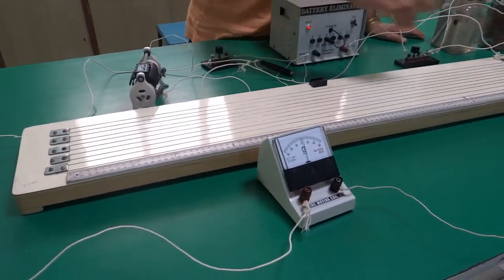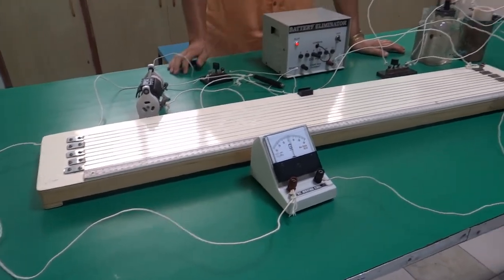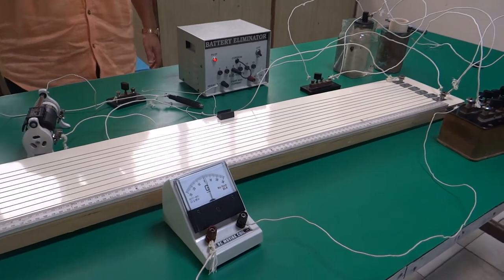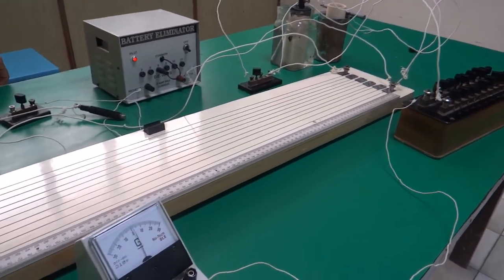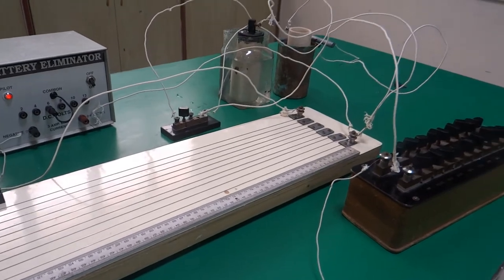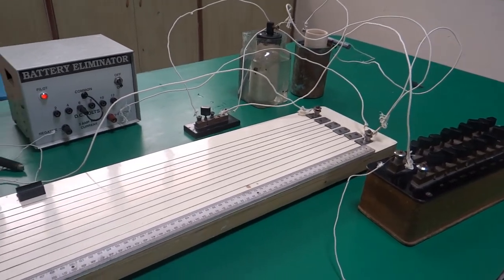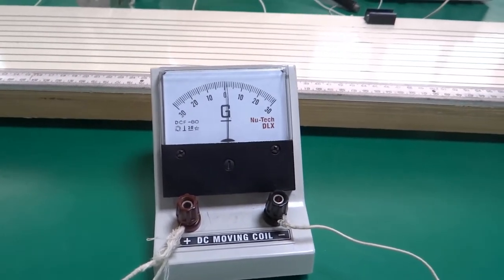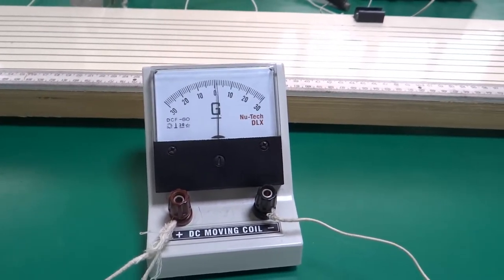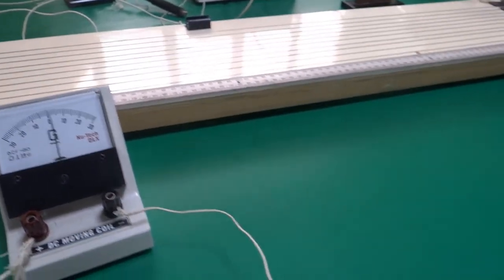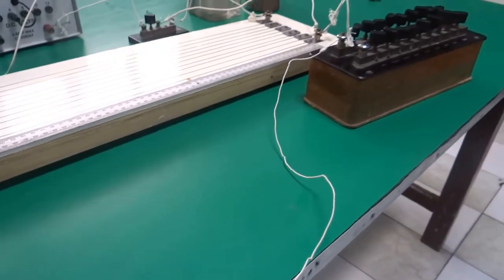This resistance box, even if you want, you need not connect with the circuit. This is required only when deflection in galvanometer is pretty large. When the galvanometer needle is steadily moving left or right, there is no need of resistance box. However, connecting the resistance box in series with galvanometer does not affect your reading.